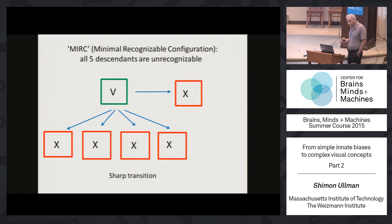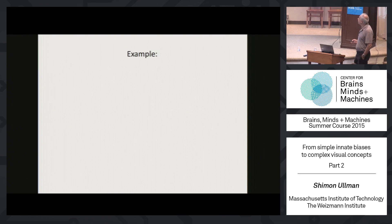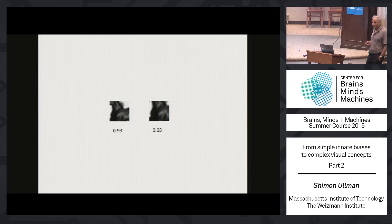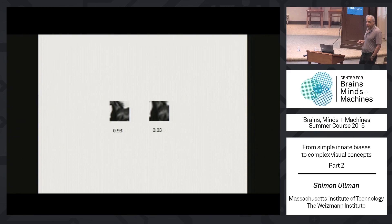I will show you first the unrecognizable one — the one which people find on average more difficult to recognize. If you recognize it, raise your hand. Don't say what you see because this will influence other people. Then I'll show you the more recognizable one. This is recognized by 93% of the subjects — 30 subjects saw each image. 93% recognized this, 3% recognized the sub-image. You can see the two very similar images and the large drop.